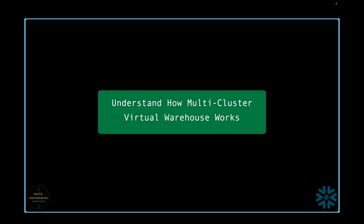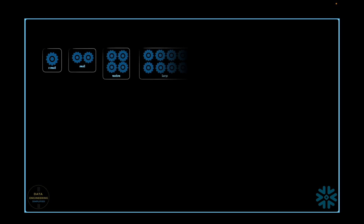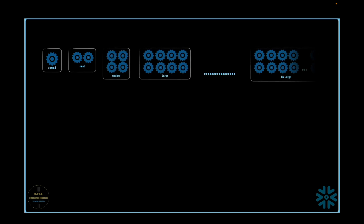Let's begin — it's all about multi-cluster virtual warehouse. When we go for a larger virtual warehouse, the number of nodes increases as we change the size of compute. Extra small has just one node, the small warehouse has two nodes, and if I go further, a 6x large cluster has 512 nodes.